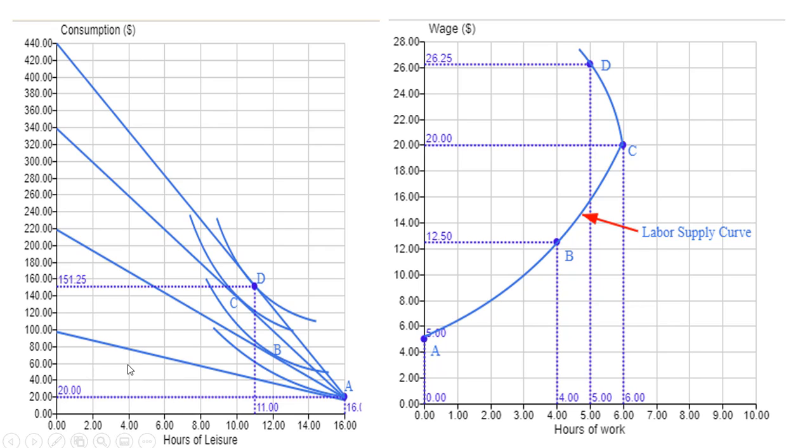Point B, the budget line got steeper. The wage increased to $12.50, and the person decided to work some positive level of hours here, four hours of work. The wage increased further. At point C here, the wage is now $20, and the person decided to work six hours. At point C, the person's taking 10 hours of leisure. So 16 minus 10 means six hours of work.